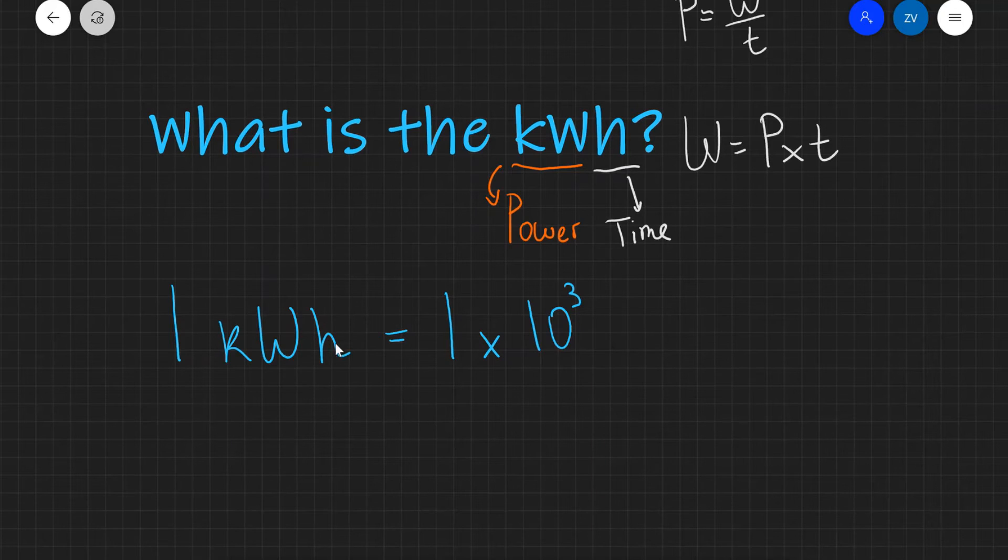And an hour, I'm going to need to convert to seconds. So there's 60 seconds in 60 minutes in one hour. So it's going to be a factor of 3,600.